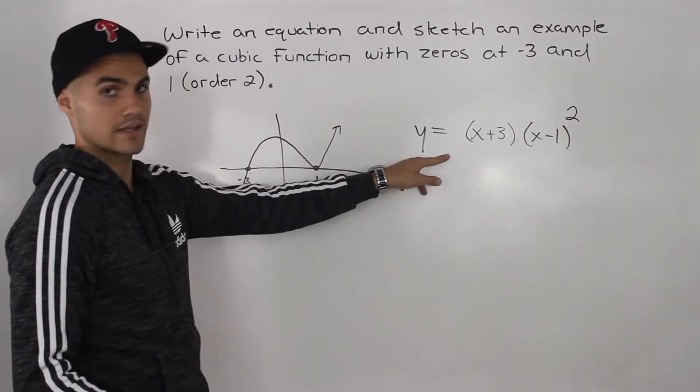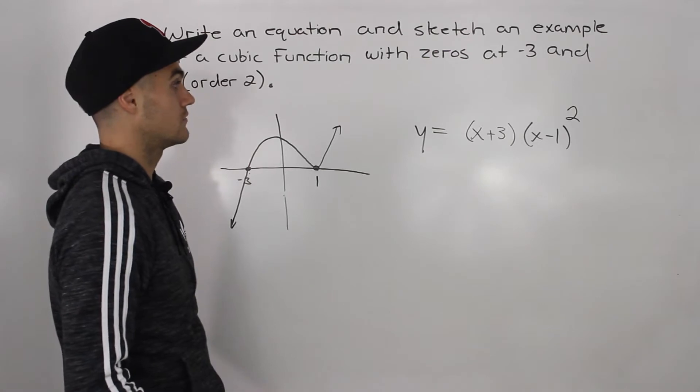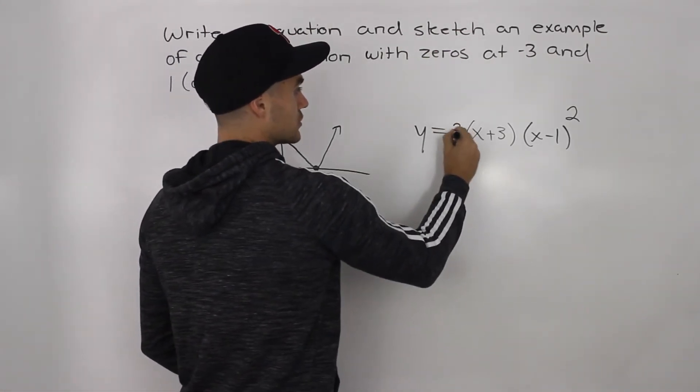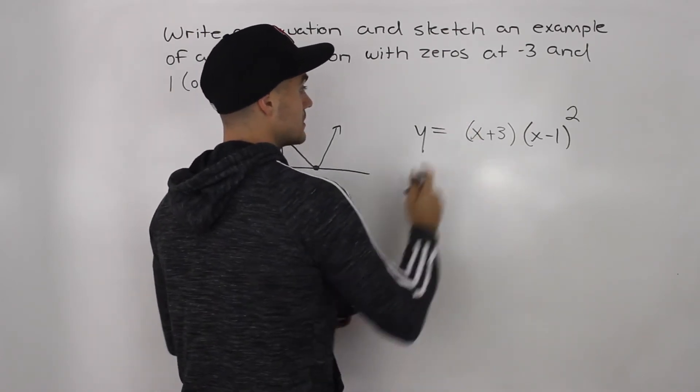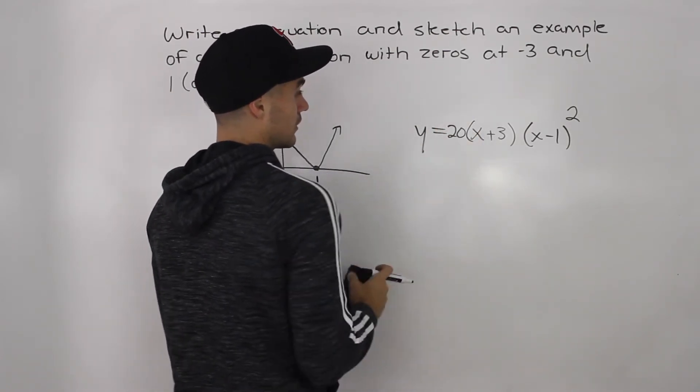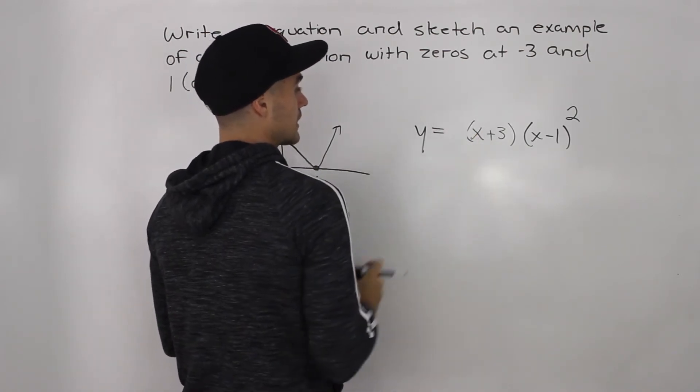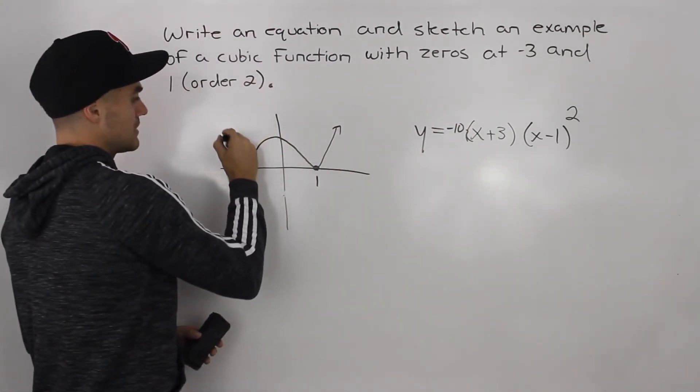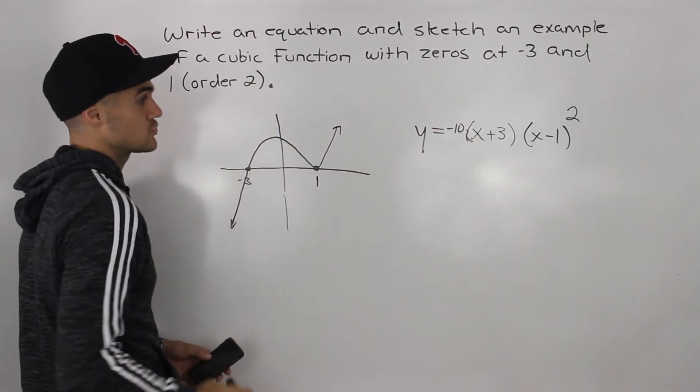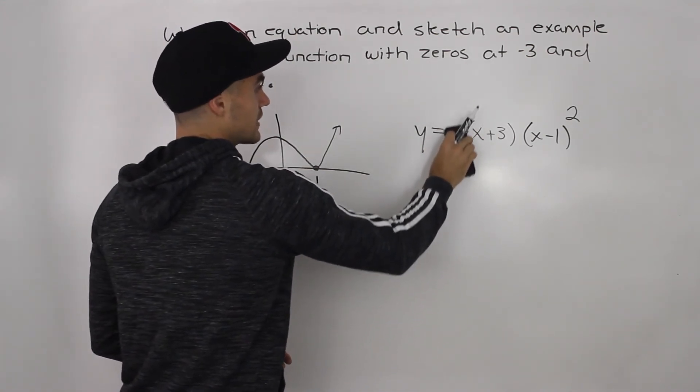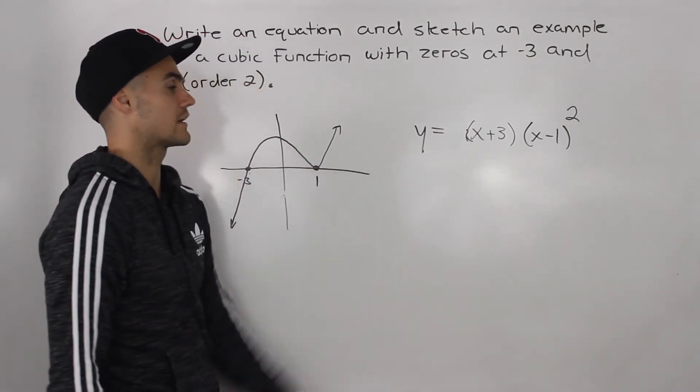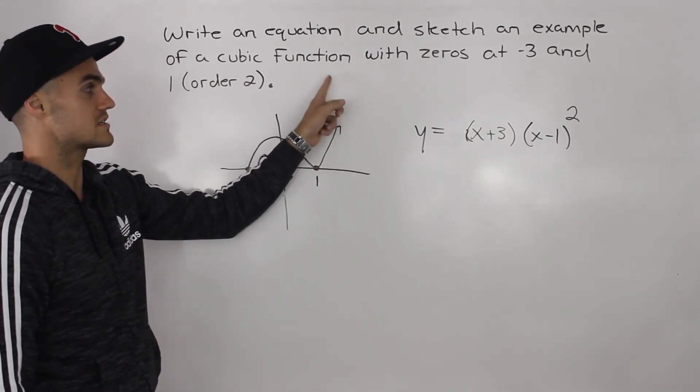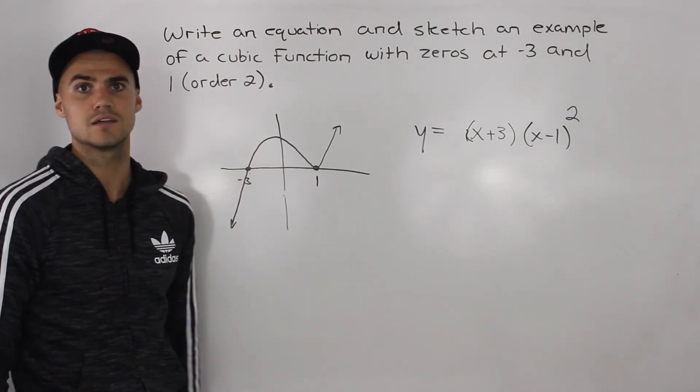And then we can just even leave it like this. That would be an example of a cubic function. Or we can put any coefficient in front here. So we could put a 2 here. We could put a 20 here. It could also be a negative leading coefficient. So we could put like a negative 10. And then the shape would be that other graph that we drew before. Whatever you want to put here, you could just leave it as 1 as well. So that is an example of a cubic function with these characteristics here. And that's an example of a sketch.